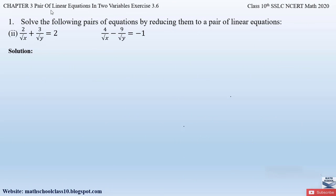Let us begin. Question number one, part two from exercise 3.6, chapter 3: Pair of Linear Equations in Two Variables says: solve the following pair of equations by reducing them to a pair of linear equations. The two given equations are: 2/√x + 3/√y = 2, and 4/√x − 9/√y = −1. Here the variables appear in the denominator under a root.